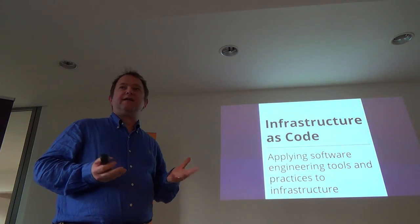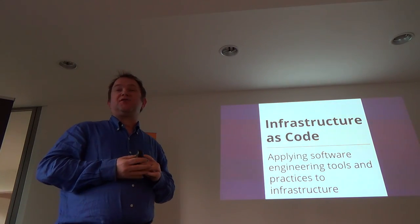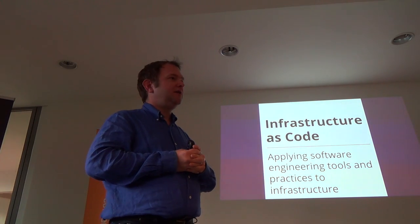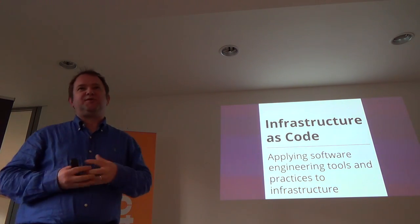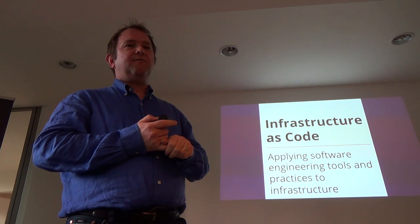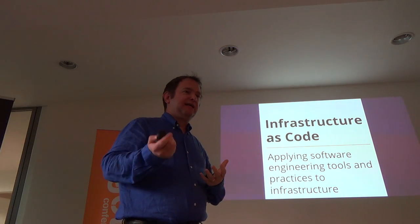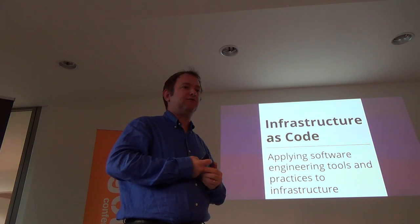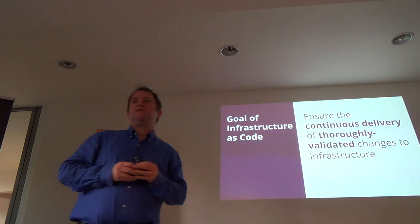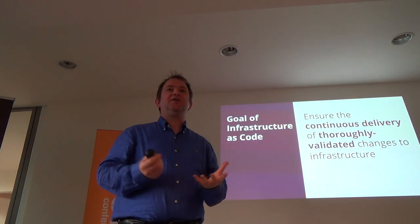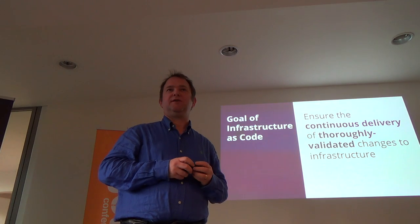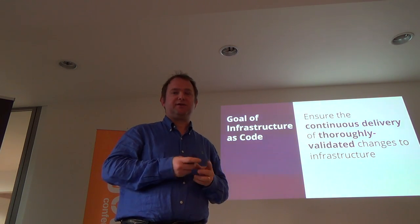One way to define infrastructure as code is that you're able to apply software engineering tools, practices, and techniques to infrastructure — things like version control, test-driven development, and continuous integration. We can do this because infrastructure has become programmable: you can put it in a file and treat it like source code. The goal is to continuously get changes through and ensure every change is thoroughly validated before it goes to production.